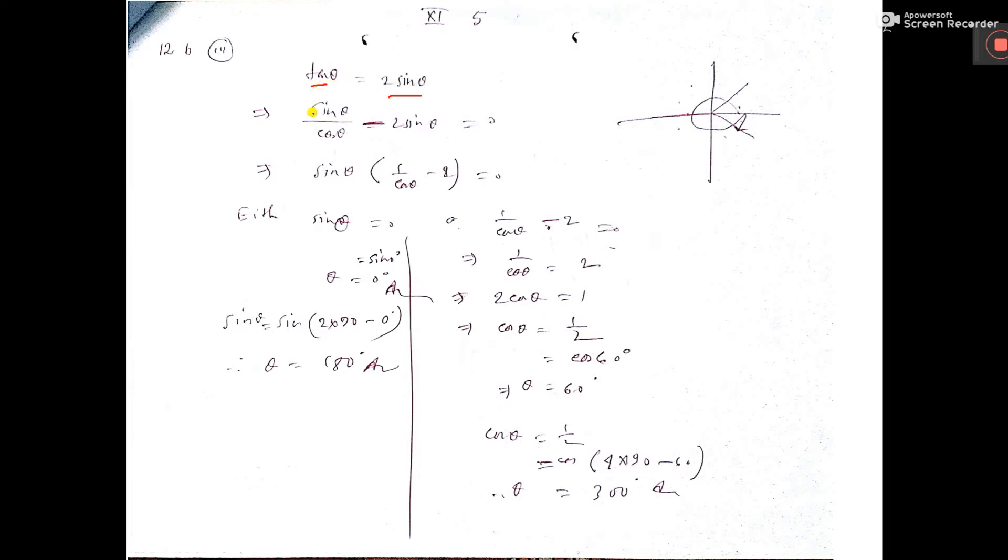tan θ can be written as sin θ / cos θ. Taking terms to the left side, we get sin θ / cos θ - 2 sin θ = 0. Taking sin θ common: sin θ (1/cos θ - 2) = 0.